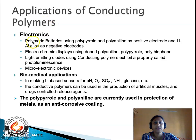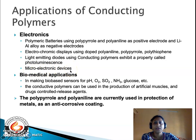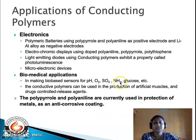Conducting polymers find major use in electronics such as polymeric batteries using polypyrrole and polyaniline as positive electrodes and lithium aluminum alloy as negative electrodes, electrochromic displays using doped polyaniline, polypyrrole, and polythiophene, and light emitting diodes — as conducting polymers exhibit photoluminescence — as well as microelectronic devices. They are also used in biomedical devices for making bio-based sensors for pH, oxygen, sulfur dioxide, ammonia, glucose, etc., in artificial muscles and drug controlled release agents. Polypyrrole and polyaniline are currently used in protection of metals as anti-corrosive coatings.